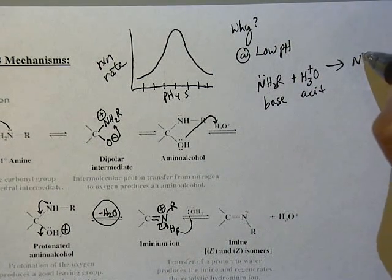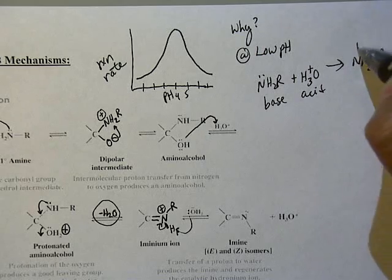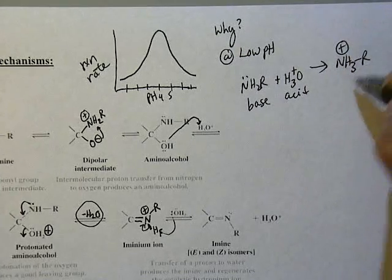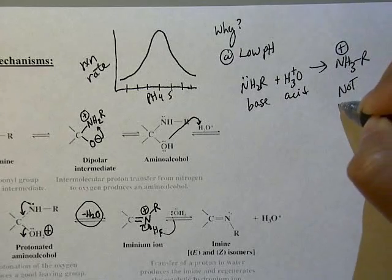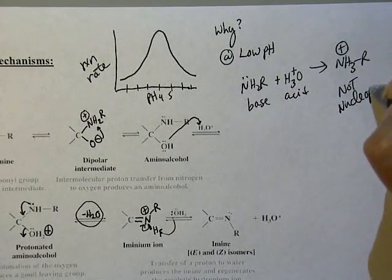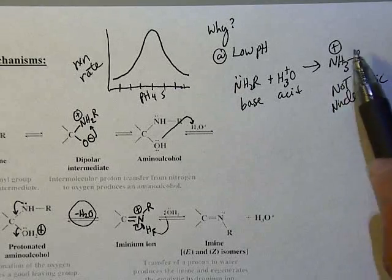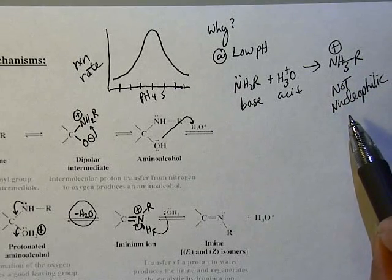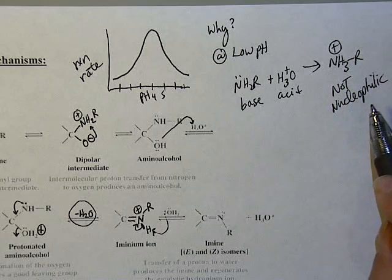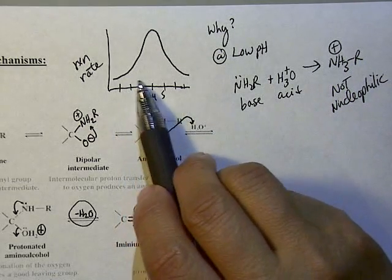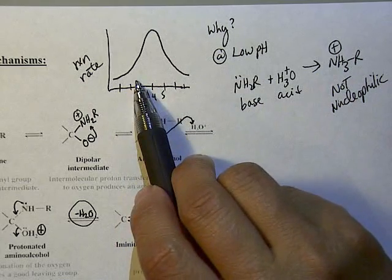Because there's a lot of acid around, it's going to prefer to do an acid-base reaction. In that case what you're going to form is an ammonium salt which is not nucleophilic, because it no longer has the lone pair and in fact it's now electrophilic.